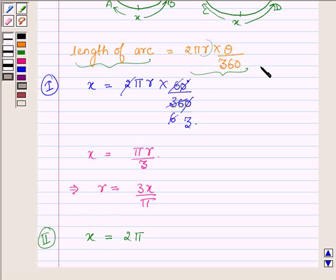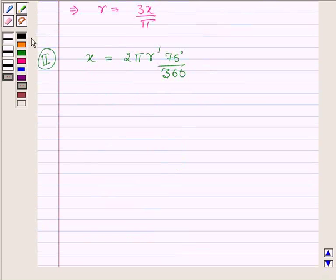And in the second circle, radius we have considered as R' dash. Then we have theta. Theta in the second circle is 75 degrees upon 360. Which implies R' dash is equal to 360 times x upon 2 pi times 75 degrees.